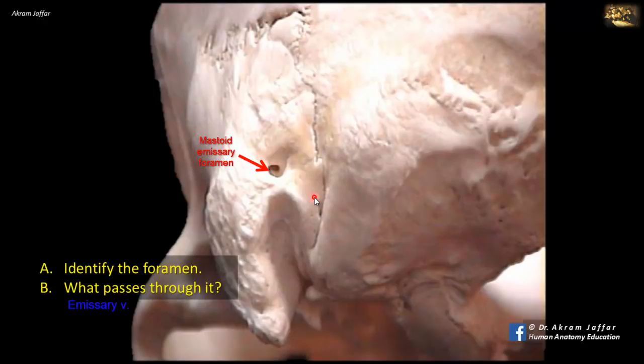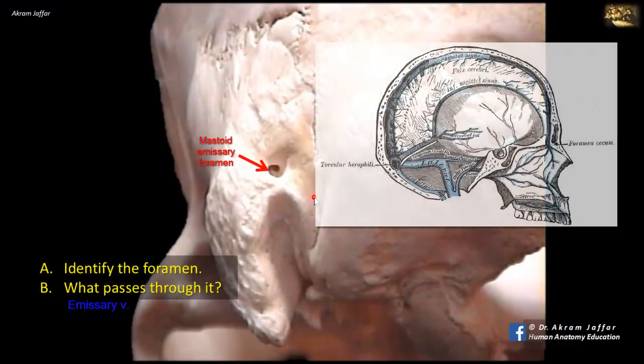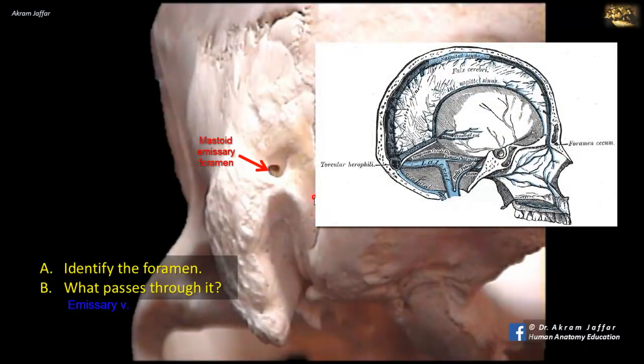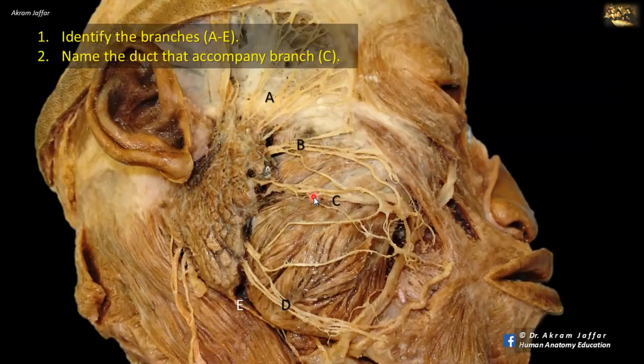The mastoid emissary foramen communicates between the posterior auricular vein, which is located behind the auricle, and the transverse venous sinus.